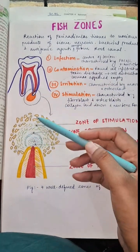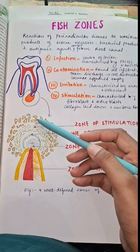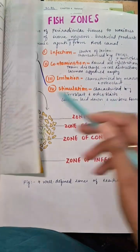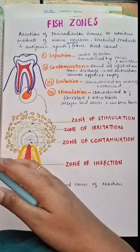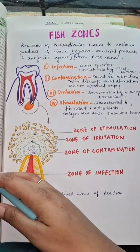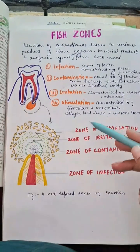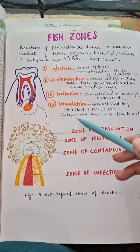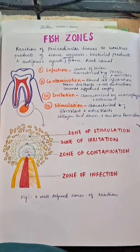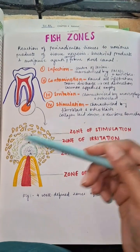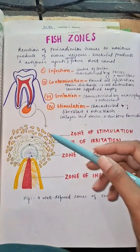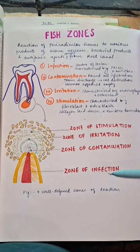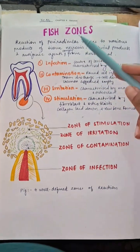Next is the zone of stimulation, characterized by bone-forming and connective tissue-forming cells — fibroblasts and osteoblasts — which lay down collagen and new bone formation. These four are the well-defined zones of reaction given by Fish.